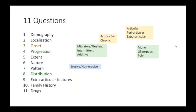When we talk about the nature, we want to know whether the arthritis is erosive — meaning it destroys the joint structure — or non-erosive, meaning it is not destructive. In distribution, we want to know whether the central axial joints such as the spine are involved, the size of the joints involved — large joints like knee, hip, shoulder, or elbow versus smaller joints like metacarpal, tarsal, and phalangeal joints — the symmetry around the axis, and whether it is upper or lower limb involvement.